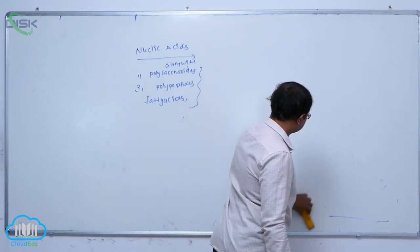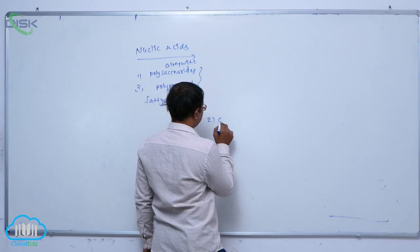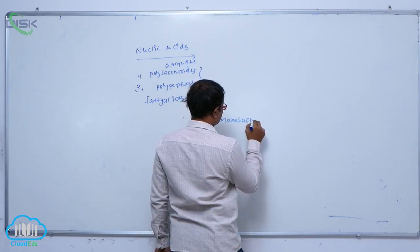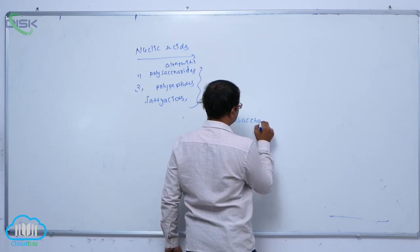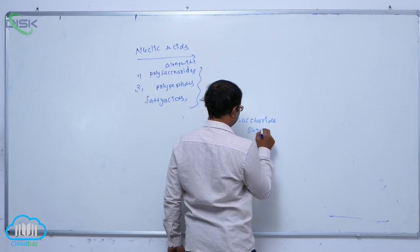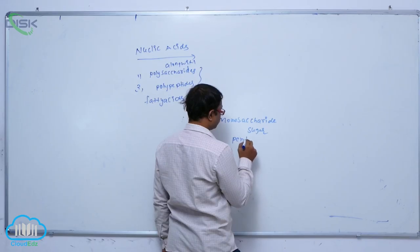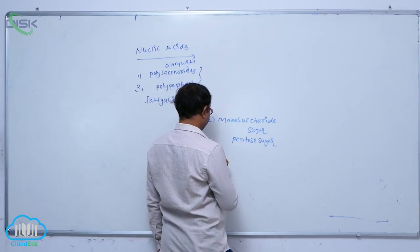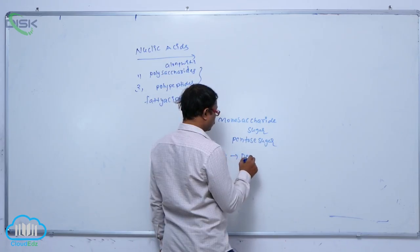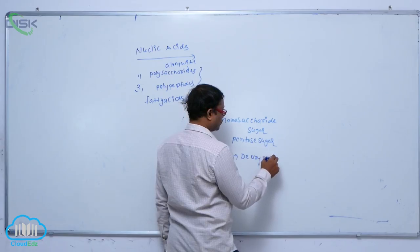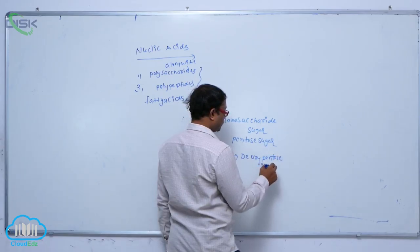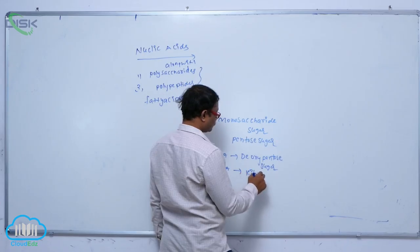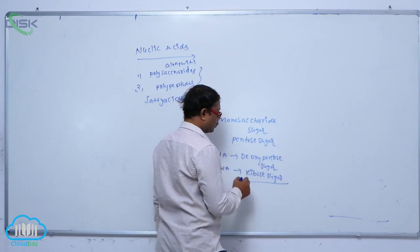The second component is known as monosaccharide sugar, that is pentose sugar. So generally, in DNA, deoxyribose sugar is present. But in RNA, only ribose sugar is present.